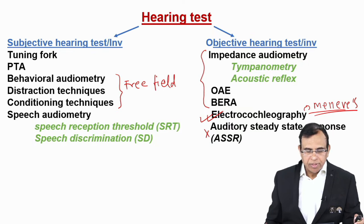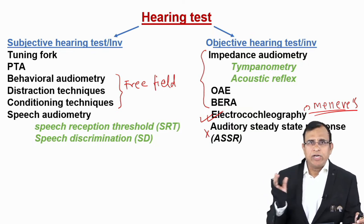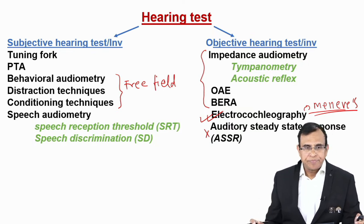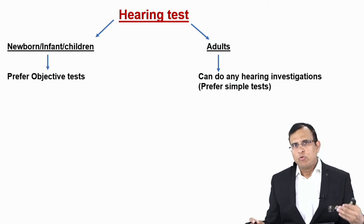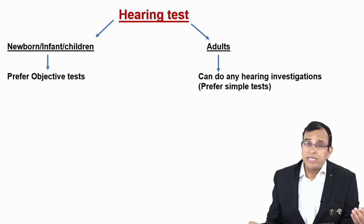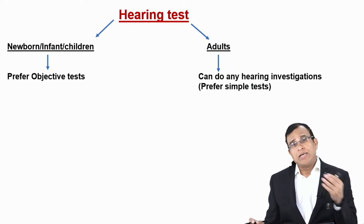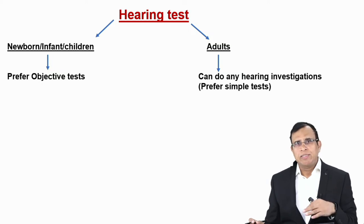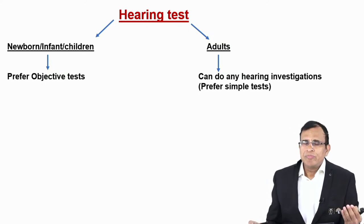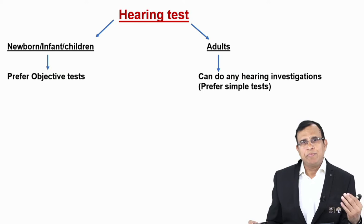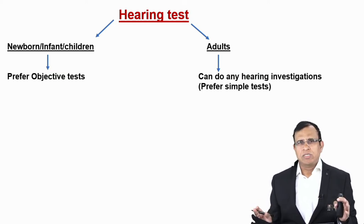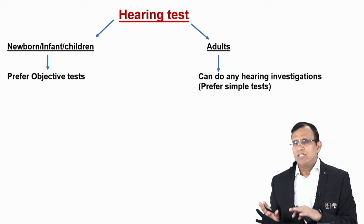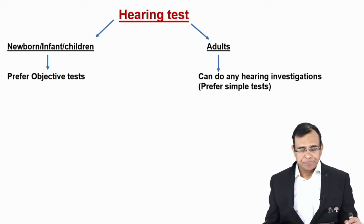In newborns, infants, and children, we do different types of tests because you cannot do subjective investigations — you must use objective ones. In adults you can do subjective or objective, and we prefer the easiest, simplest test that gives you all the information you need without being very costly.